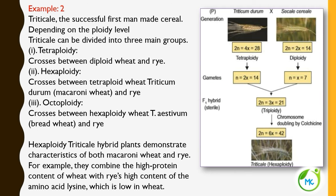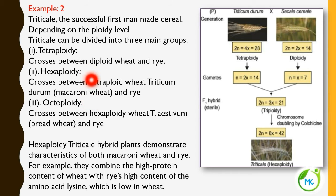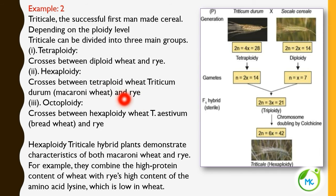The second example is triticale — the first successful man-made cereal. Based on the ploidy level, triticale is of three different groups: tetraploidy, hexaploidy, and octaploidy. Tetraploidy triticale is a cross between diploid wheat and diploid rye. Hexaploidy triticale is a cross between tetraploid wheat and diploid rye (4+2 = hexaploid). Octaploidy triticale is a cross between hexaploid wheat (Triticum aestivum) and diploid rye — six plus two gives octaploidy (eight sets).